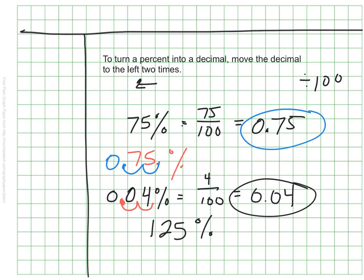If I have 125% — more than 100% — here's my implied decimal. I'm going to move it once, twice. My equivalent decimal is 1 and 25 hundredths, or 1.25.